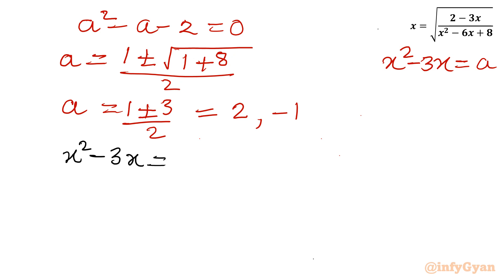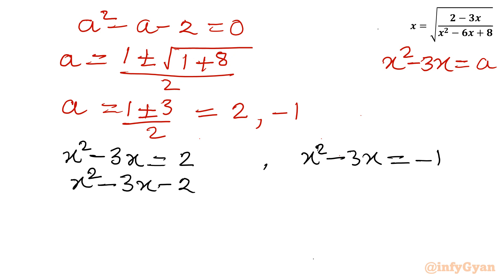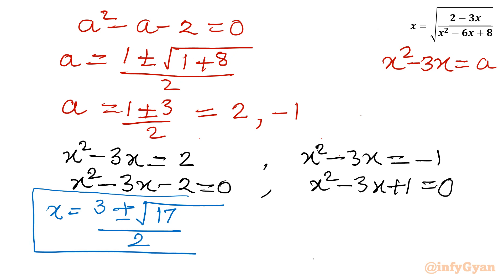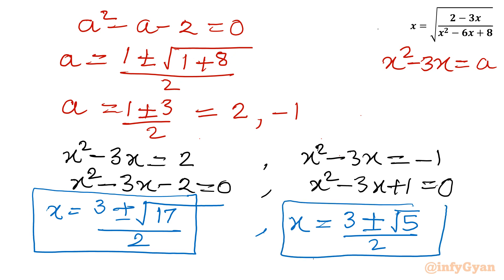Substituting back, we get two equations: x squared minus 3x equals 2, giving x squared minus 3x minus 2 equals 0; and x squared minus 3x equals minus 1, giving x squared minus 3x plus 1 equals 0. Applying the quadratic formula to the first gives x equals (3 plus or minus root 17) over 2. The second gives x equals (3 plus or minus root 5) over 2. So we have four candidate real solutions.